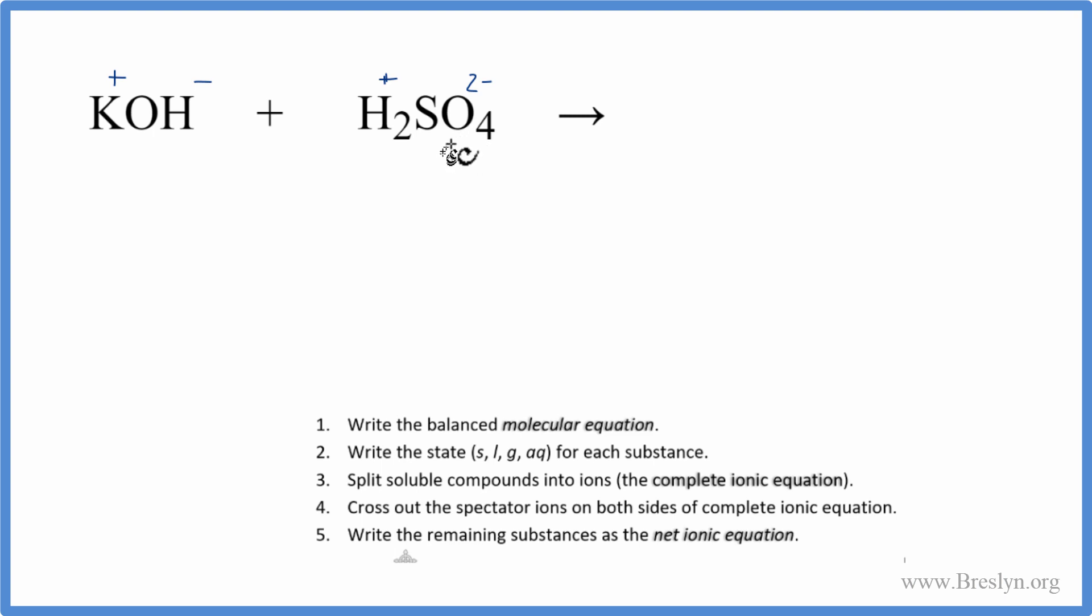Now, in a double displacement reaction, in this case also a neutralization reaction, the K will go with the SO4. The positive will go with the negative to form KSO4. But because we have a 2- here and this is just +1, we need 2 of these potassiums. So K2SO4, that's our potassium sulfate.